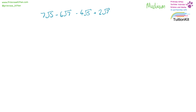7 square root 5 minus 4 square root 5 is 3 square root 5. Minus 6 square root 7 plus 2 square root 7 is minus 4 square root 7. So the answer is 3 square root 5 minus 4 square root 7.